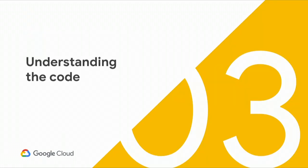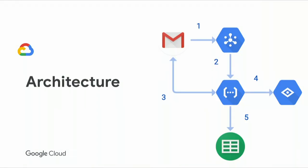Now I'll hand it over to Chen, who's going to talk about how we built this application. So this project is actually a simple five-step process. First, you set up Gmail push notifications so that every time a new message arrives, Gmail will send a push notification to Cloud PubSub. Cloud PubSub will then deliver this to Cloud Functions, and our function will query the Gmail API and download the full message. If there is an image attachment, Cloud Functions will send the image data to Cloud Vision API for analysis.